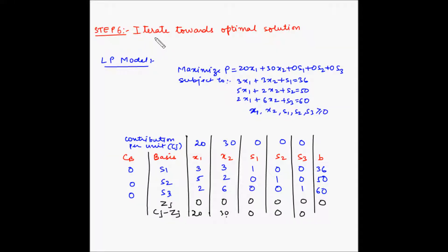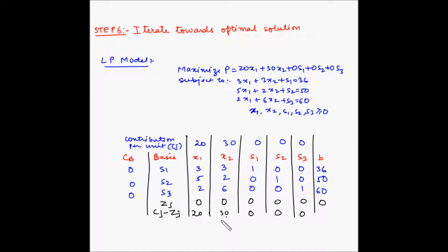After we have performed the optimality test, we now move to step number 6 which is to iterate towards the optimal solution. In the previous step, we determined that the basic initial feasible solution is not the optimal solution as we have positive values for Cj minus Zj. Now, we need to observe the values of Cj minus Zj and mark the column which has the highest positive value.